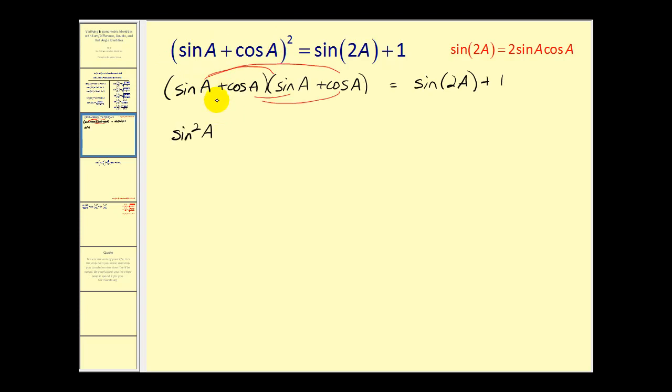When we multiply this out we'll have sine a times sine a or sine squared a. Next we'll have a sine a times cosine a and then we have a cosine a times sine a. So we have two like terms. So we'll have plus two sine a cosine a plus cosine squared a.